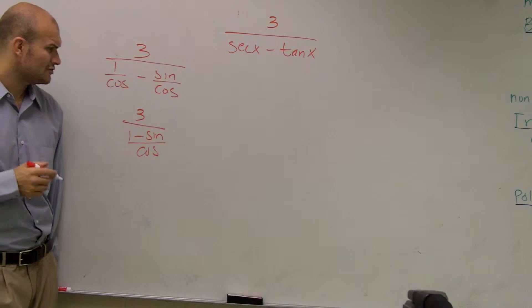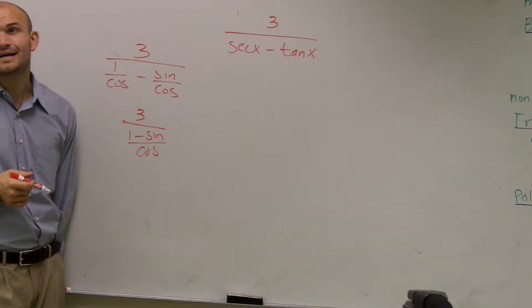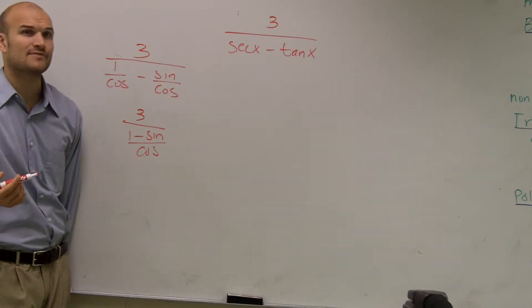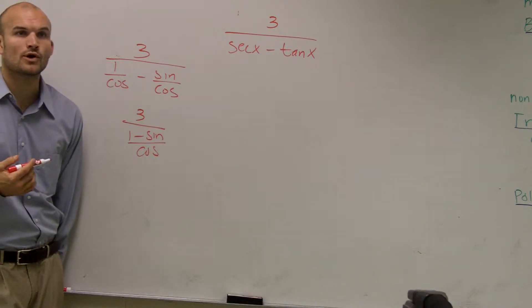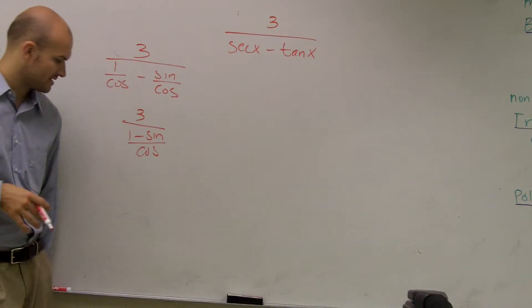But then, again, you're still going to have to do more work because 1 minus sine over cosine doesn't give you anything. So you're still going to have to do some more work to simplify this.